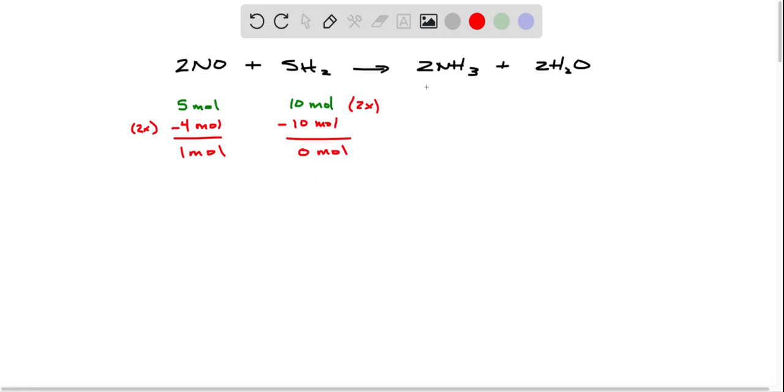On the product side, we still have 2x. And so what's twice as much of 2? 4 moles of NH3 will wind up getting made.